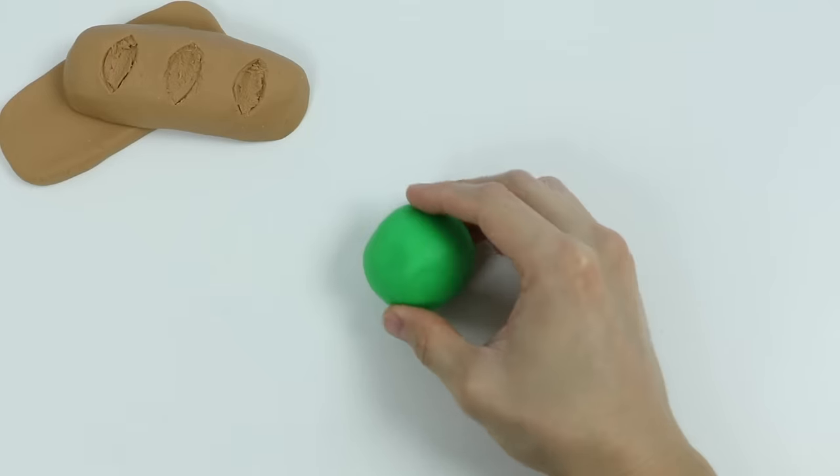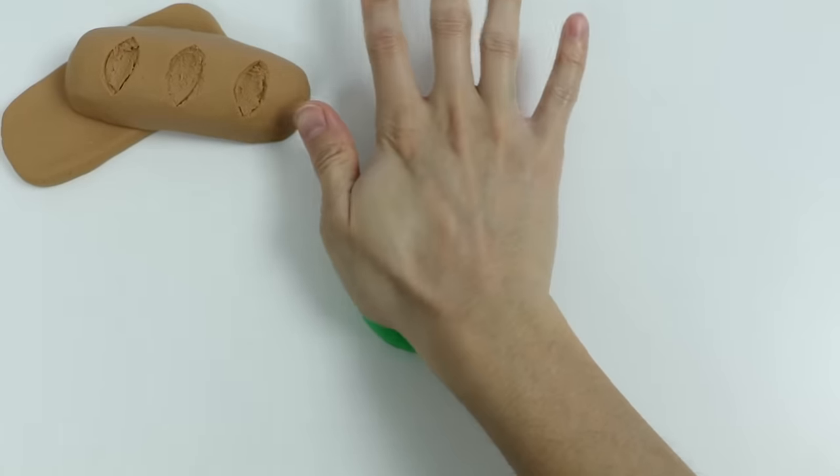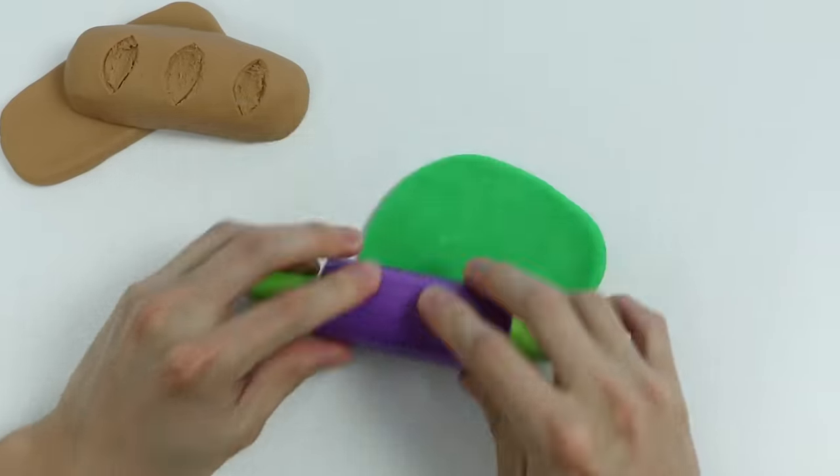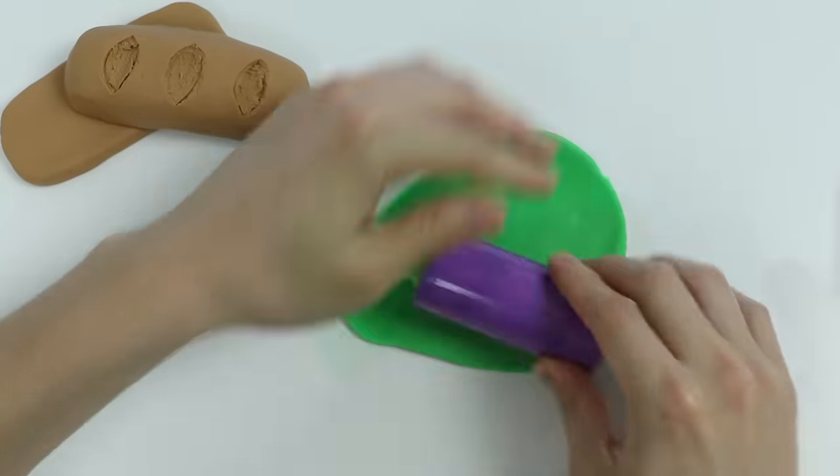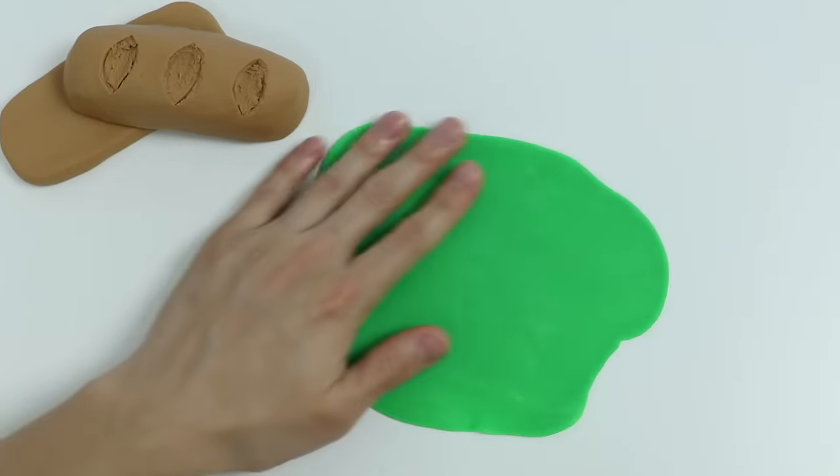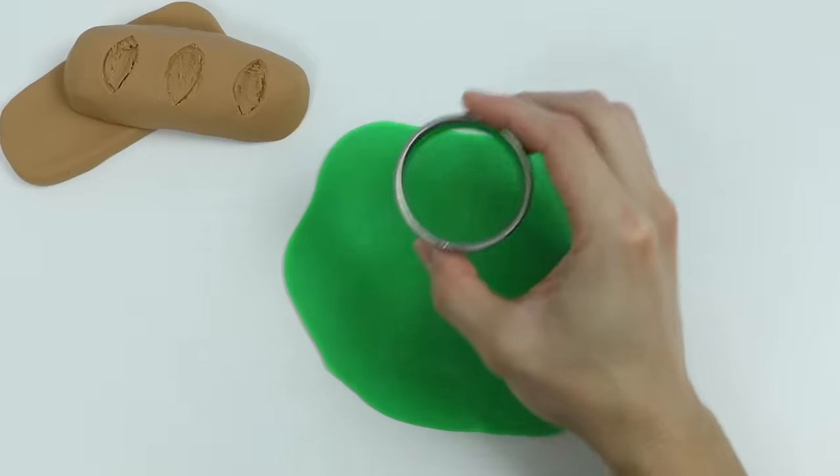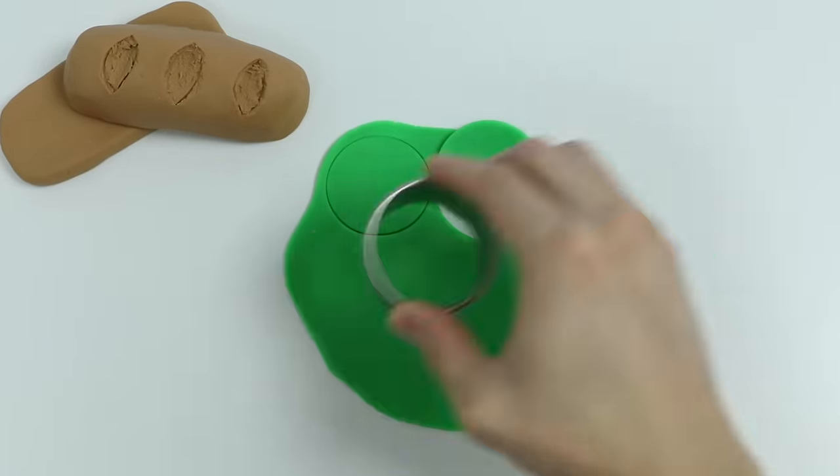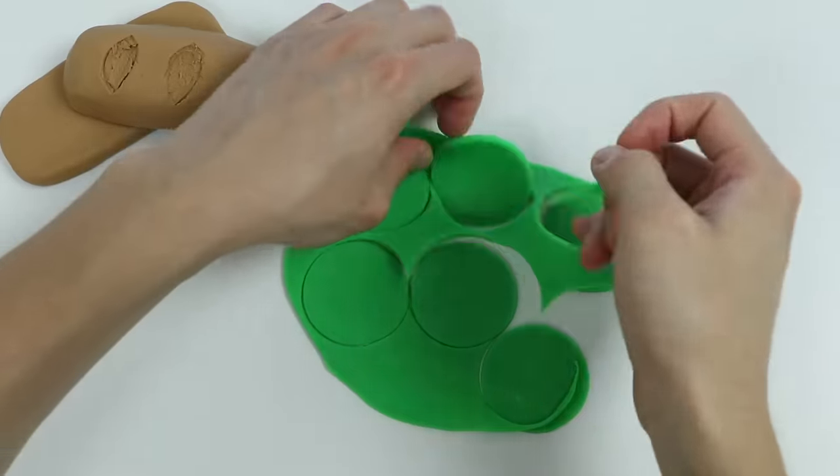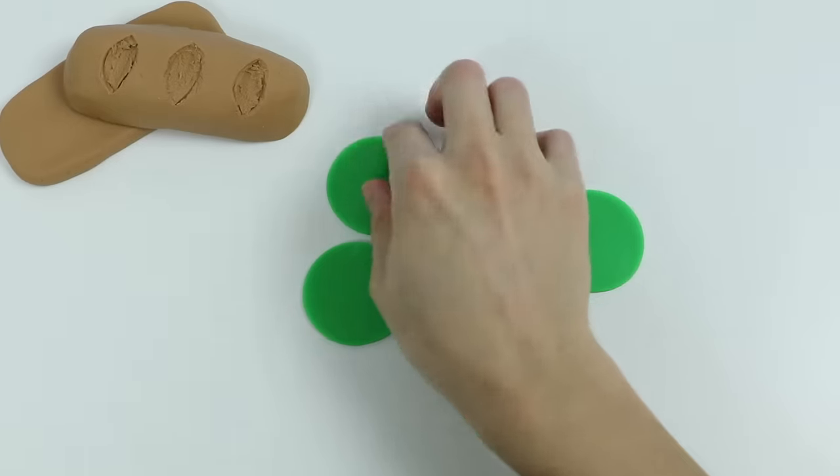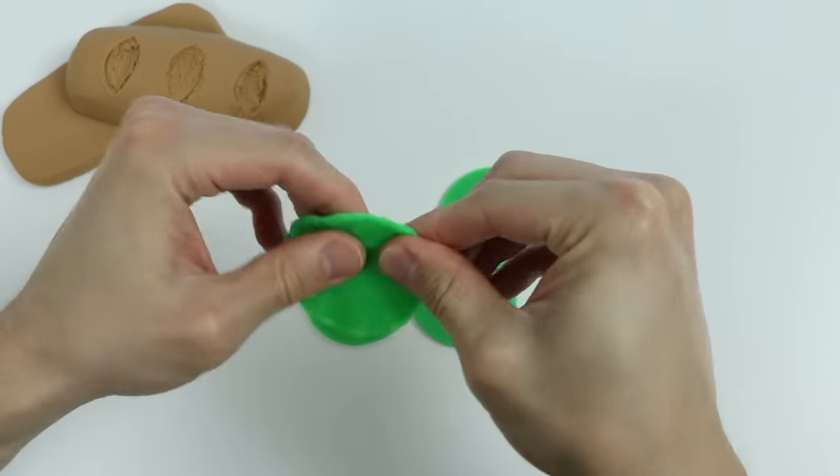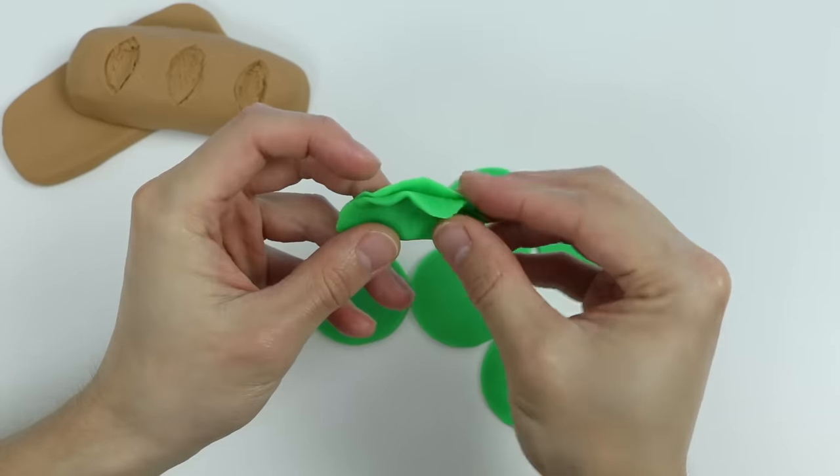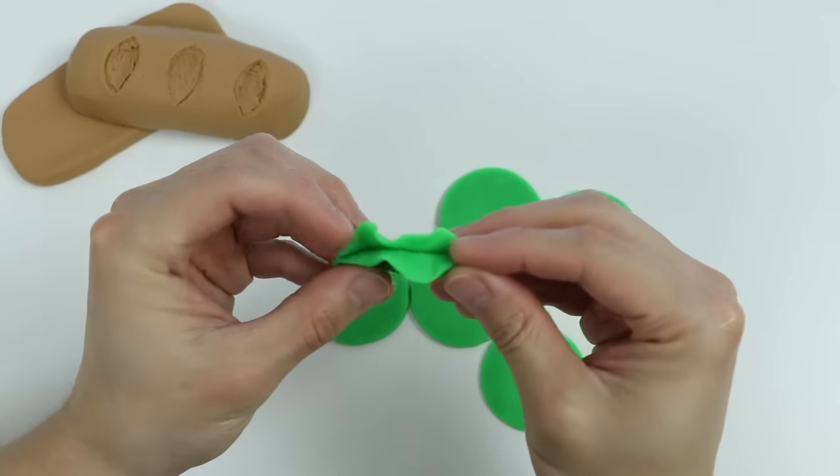Excellent, we just finished making our bread. Now we have to make the ingredients for our sandwich. Start by rolling out some green Play-Doh. Now let's use this circle cutter.